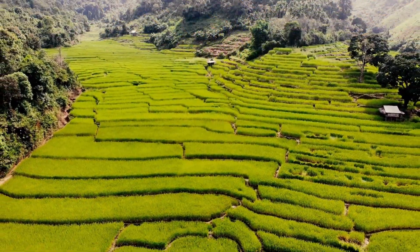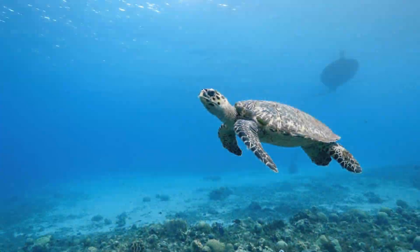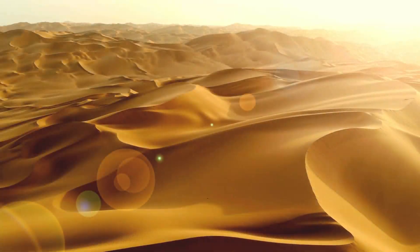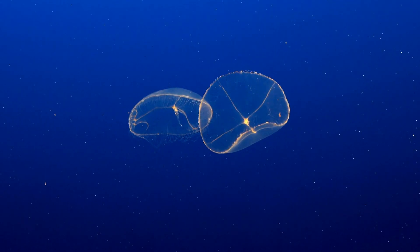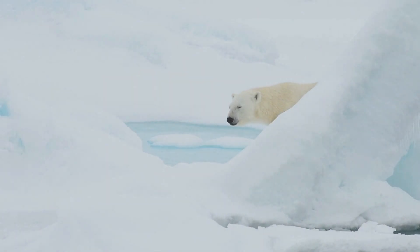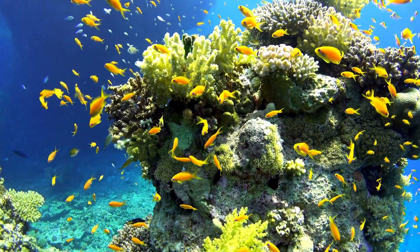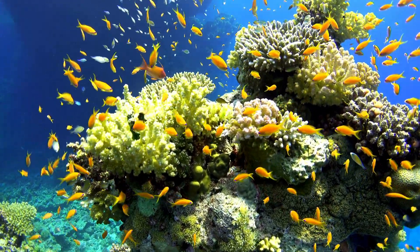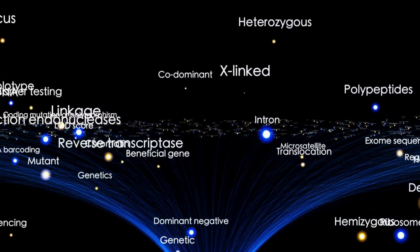Life exists in a wide range of ecosystems, including terrestrial, marine, freshwater, and extreme environments such as deserts, rainforests, deep-sea hydrothermal vents, and polar regions. Each ecosystem harbors its own distinct species and interactions, contributing to the overall biodiversity of our planet.